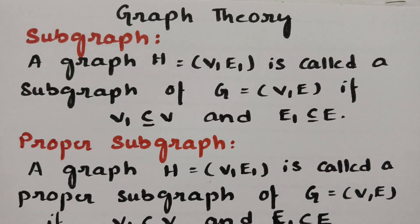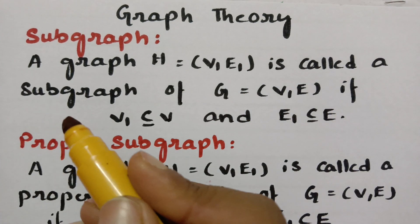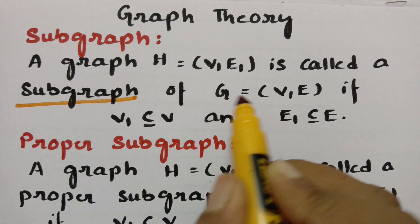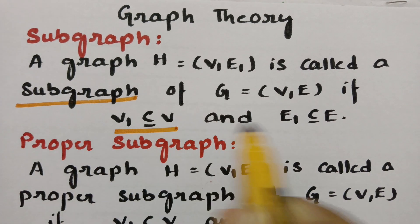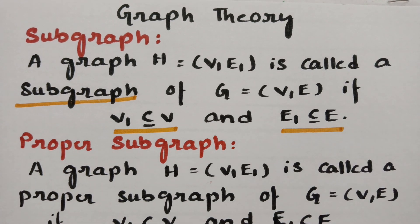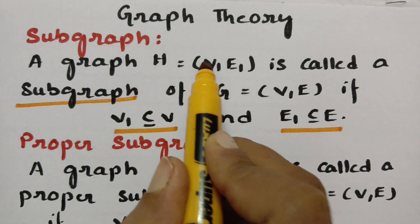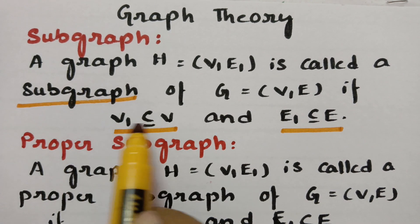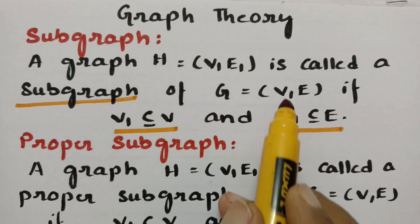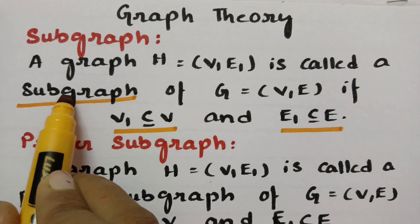Now let me define a subgraph formally. A graph H = (V1, E1) is called a subgraph of the main graph G = (V, E) if V1 is a subset of or equal to V, and E1 is a subset of or equal to E. V1 and E1 are selected or abstracted from the main sets V and E.